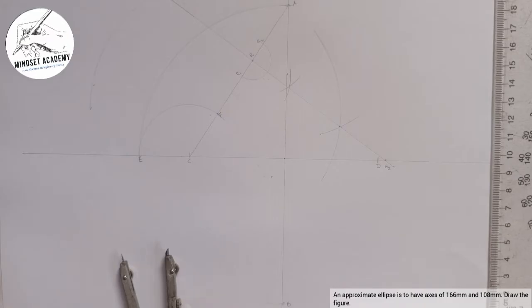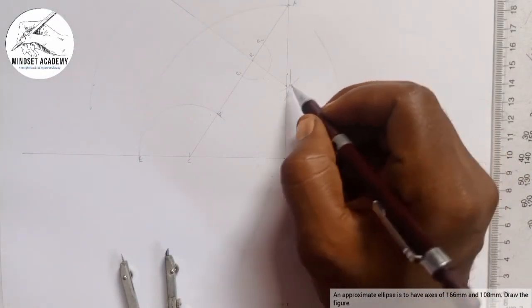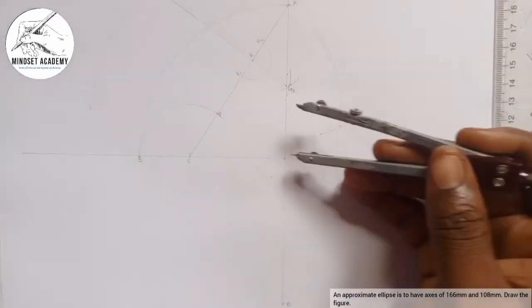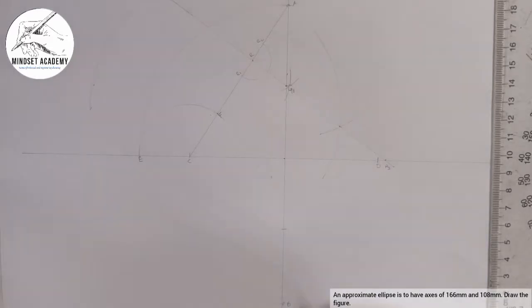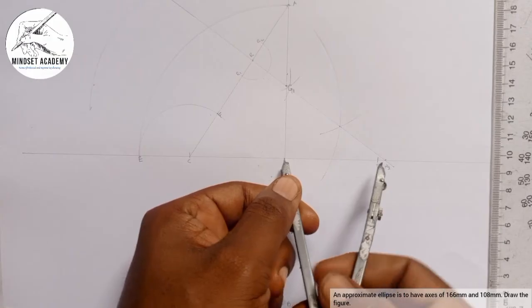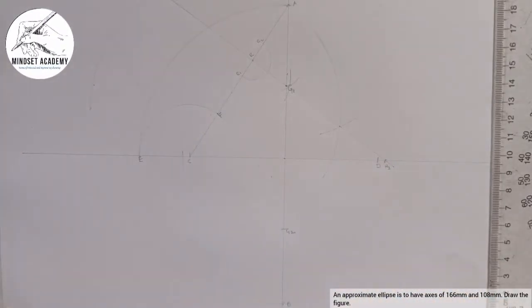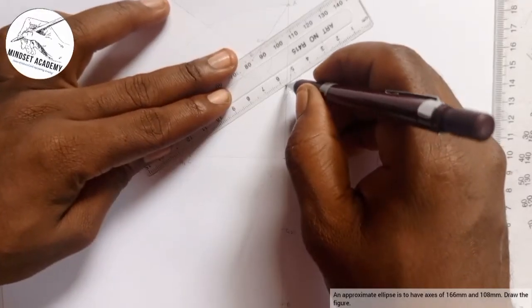Now where the line cuts this line you've drawn here, we'll call it G1. Now you place your compass from this point to G1, you mark the opposite side that will be G2. Similarly you place your compass from this point to H2 in order to get H1.